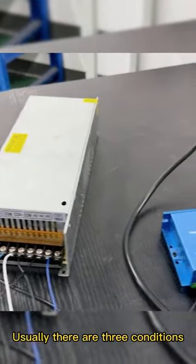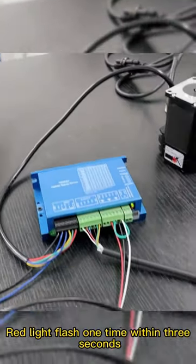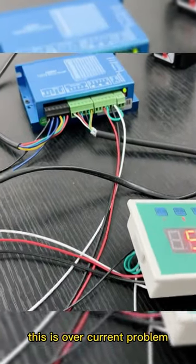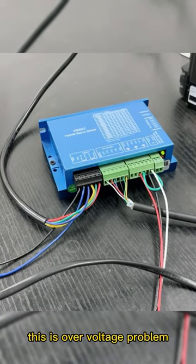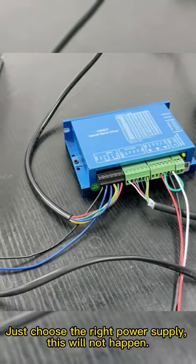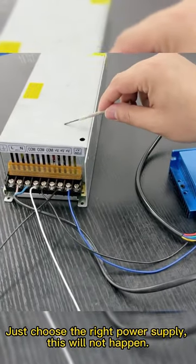Usually, there are three conditions. Red light flashes once within three seconds - this is an overcurrent problem. Red light flashes twice within three seconds - this is an overvoltage problem. Just choose the right power supply and this will not happen.